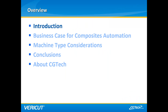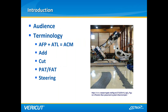The presentation will cover a brief introduction and some terminology, followed by a discussion of why composites automation might make financial sense and what should be considered when selecting a machine type. This presentation is applicable to anyone considering expanding manufacturing from hand layup methods to those including automated placement of composite material. We will collectively refer to AFP — automated fiber placement — and ATL — automated tape layup — as ACM, automated composites manufacturing.